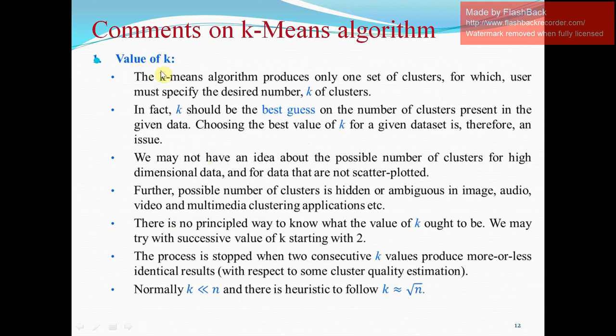Now value of K is the matter of discussion over here because the K means algorithm produces only one set of clusters for which user must specify the desired number of K clusters. In fact, K should be the best guess on the number of clusters present in the given data. We may not have an idea about the possible number of clusters for high dimensional data and for data that are not scatter plotted. Further, possible number of clusters is hidden or ambiguous in image, audio, video or multimedia format. There is no principled way to know what the value of K ought to be. We may try with successive value of K starting with 2. Then the process is stopped when the two consecutive K values produce more or less the same result or identical result. Normally, K should be less than N and there is a heuristic to follow.